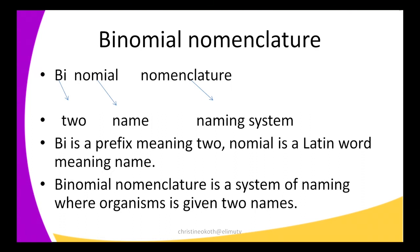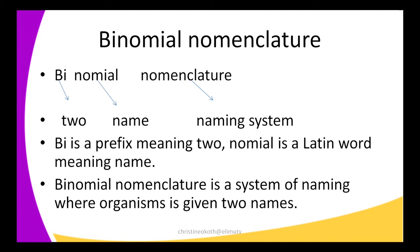Next we're going to look at binomial nomenclature. By defining this word I'm going to subdivide it into three parts: bi, nomen, and nomenclature. Bi is an English prefix that means two; nomen means a name; and nomenclature means a naming system. So binomial nomenclature is a system of naming where an organism is given two names.